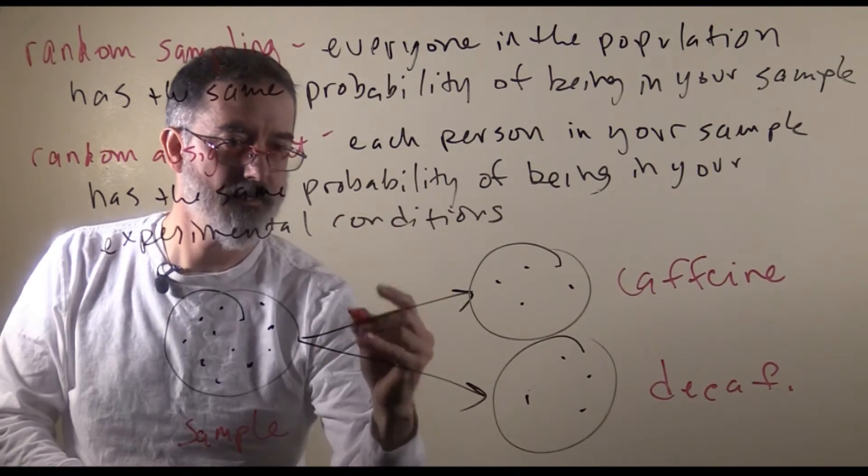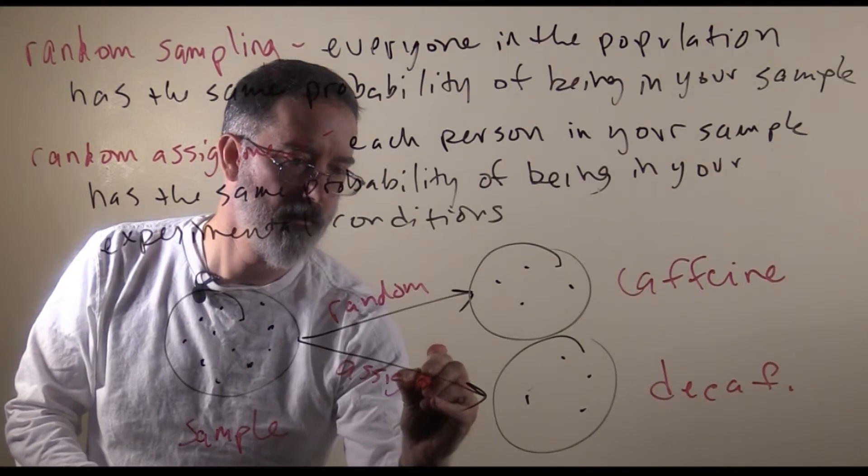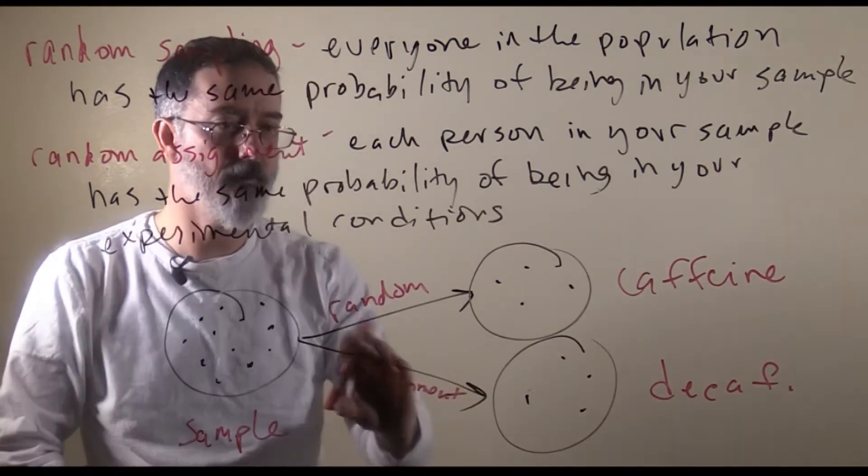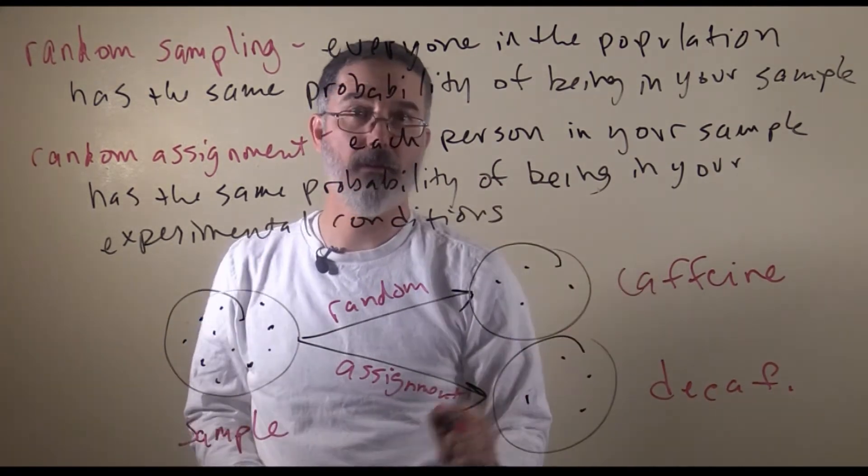In this middle process here, this would be the random assignment. You could literally flip a coin, and that would produce random assignment of individuals to two different conditions.